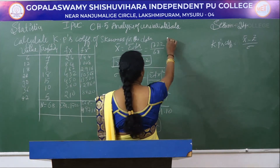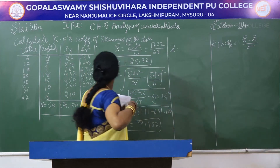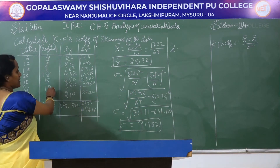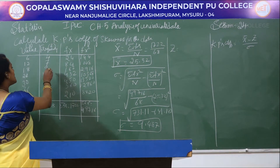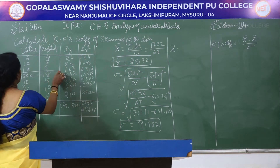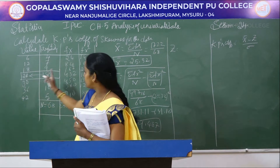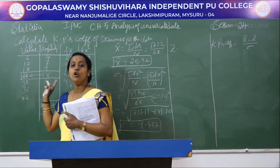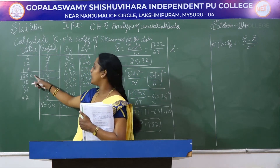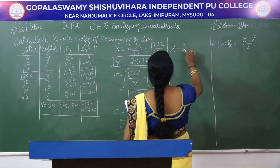Lastly, we find the mode value z. We look for the maximum frequency in the frequency column — 18 is the maximum frequency. For this maximum frequency, the corresponding x value is taken as the mode. The corresponding value in the x column for frequency 18 is 24. So our mode z = 24.